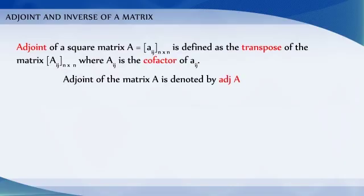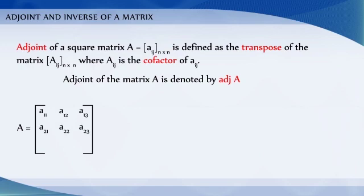Adjoint of the matrix A is denoted by adj A. Let matrix A equal [a11, a12, a13; a21, a22, a23; a31, a32, a33].